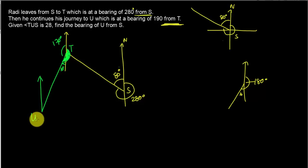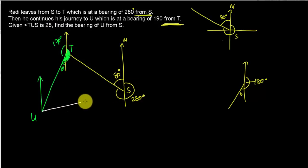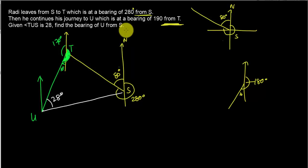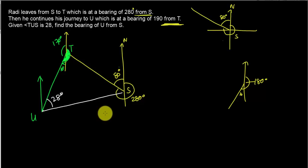I'll also sketch the north at U, then write U. The question states angle TUS = 28°, so I connect the points and mark this angle as 28°. This is my completed diagram. Now find the bearing of U from S — that means from the north of S, rotate clockwise until you reach line SU. To find this, I need to solve the triangle.